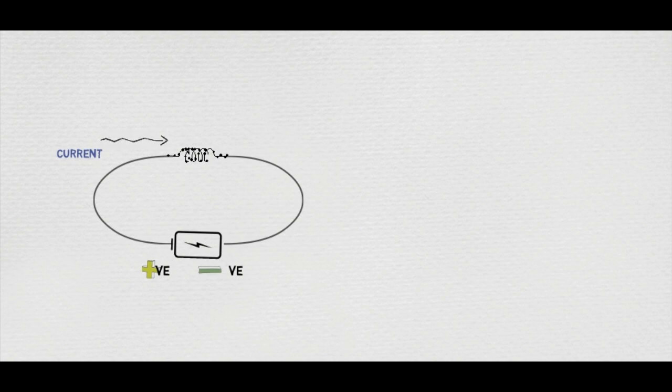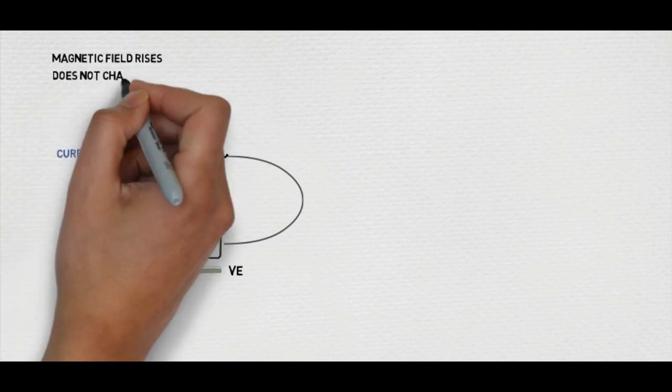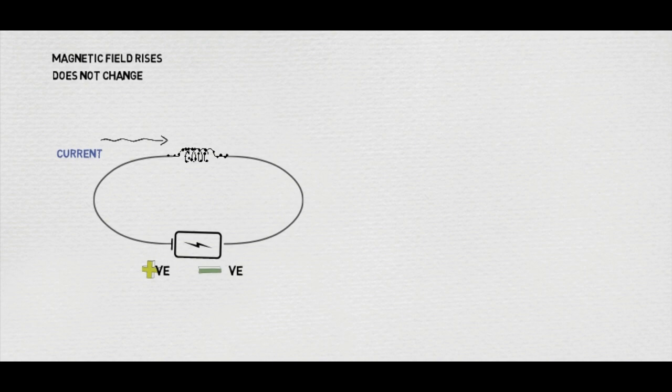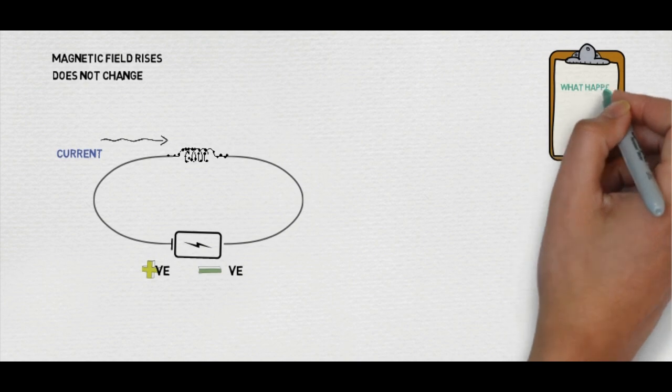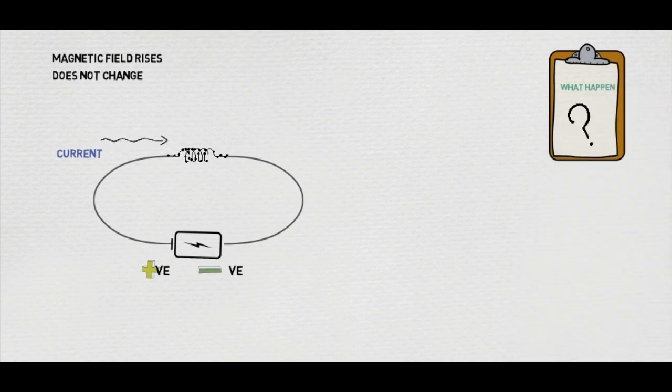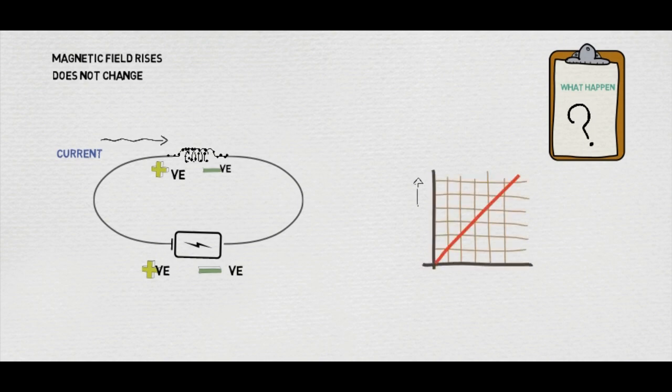But after a certain period of time, when the magnetic field rises from zero and achieves a value, the magnetic field does not change. So what happens then? As previously two terminals, positive and negative, are developed for the EMF, it will diminish slowly.